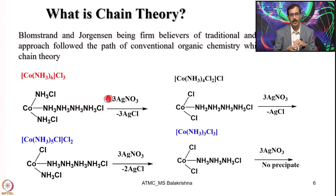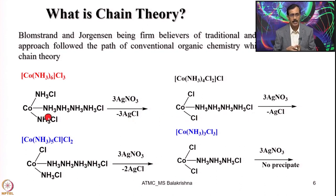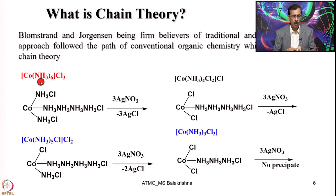As they expected, when this compound with this empirical formula was treated with 3 equivalents of silver nitrate, it led to the precipitation of 3 equivalents of silver chloride. This kind of structure is based on their understanding of organic chemistry where CH2 groups are linked to each other. That is the reason they called it chain theory, where instead of writing the now well-known octahedral geometry, they wrote it showing chloride outside and putting a chain of 4 ammonia molecules with chlorine at the end.